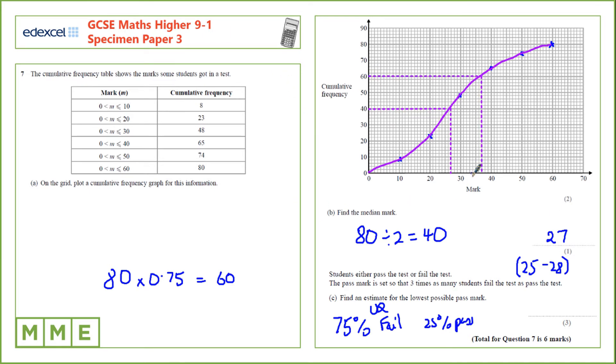Reading across from 60 and down to the mark I get 37 marks. And again depending on your graph the acceptable range for this is 35 to 38 marks.